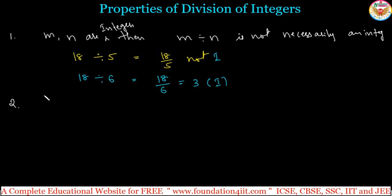And if m is a non-zero integer, then m divided by m. If m is non-zero except 0, maybe positive or negative, m divided by m will get 1. So, this is always 1. You check this. Minus 2 divided by minus 2 is also 1. 3 by 3 is 1. Minus 23 divided by minus 23 is 1.